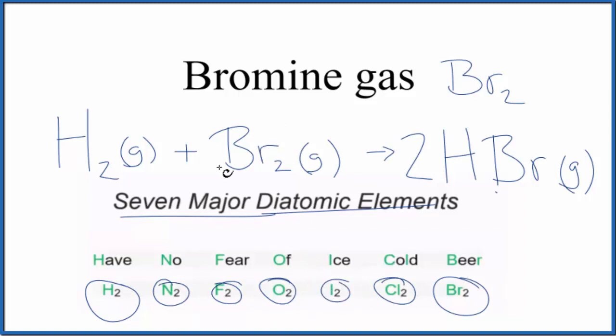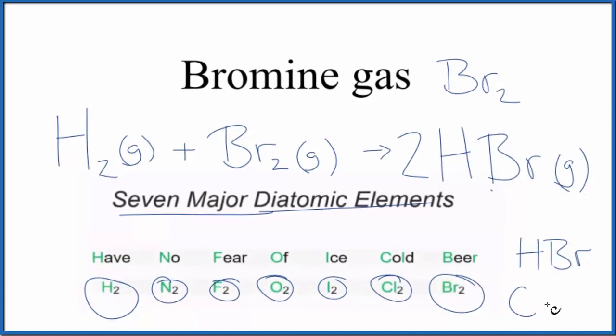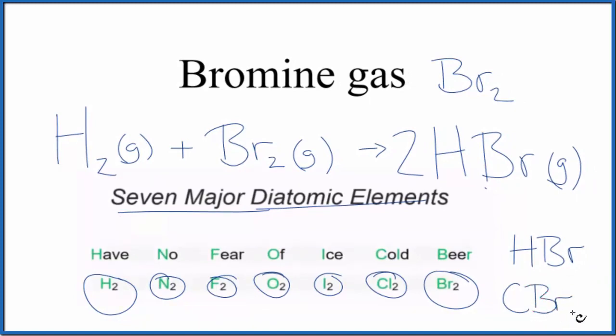Note that Br2 will be diatomic when it's by itself, but if you have something like we saw HBr, there's only one bromine there. Or if you had carbon tetrabromide, you would have CBr4, four bromines bonded to the carbon.